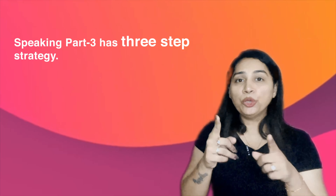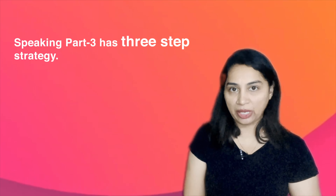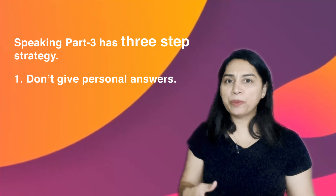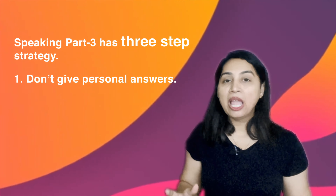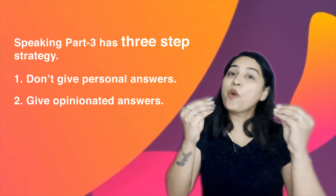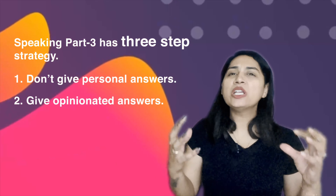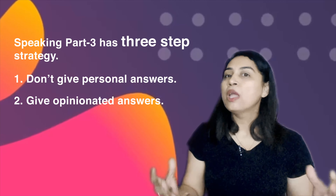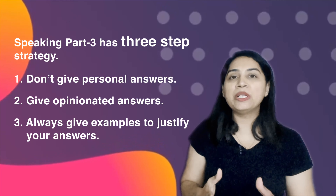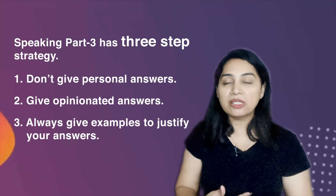Three things you have to keep in mind when developing answers for speaking part 3. Number 1: do not give personal opinion — try to avoid personal opinion because this is not about yourself, and you always have to focus on general opinion. Number 2: give opinionated answers — always try to give some preference related to the general, but not personal. And finally, number 3: always give examples to the opinion that you are presenting, as this will help you elaborate your answers.